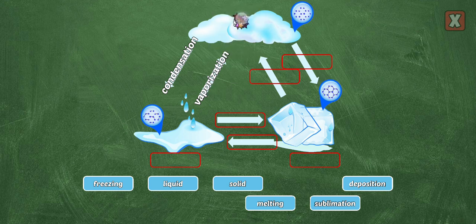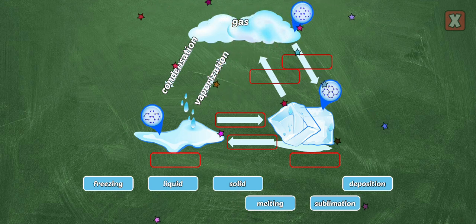Gas. In a gas, molecules are hotter, looser, and move faster. For example, steam is a gas.